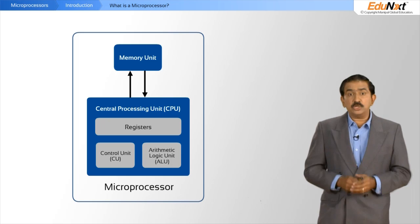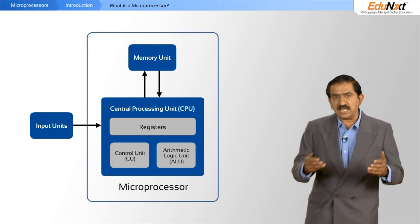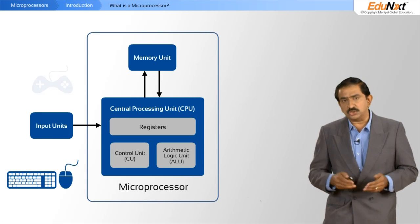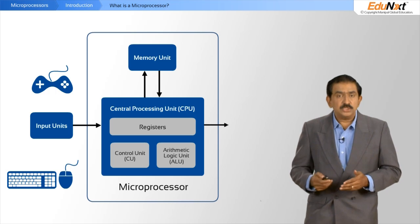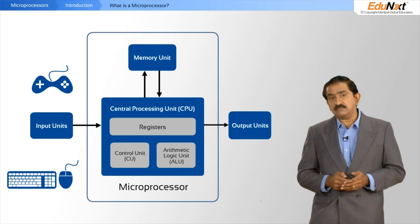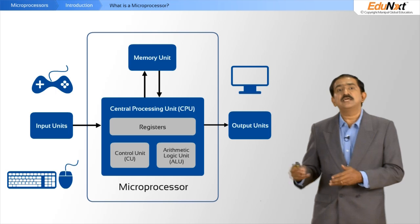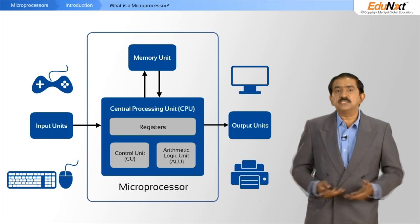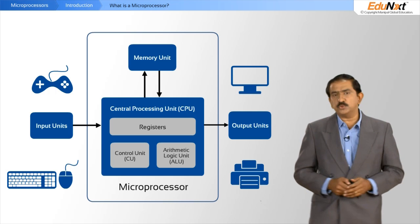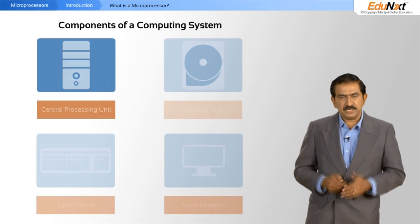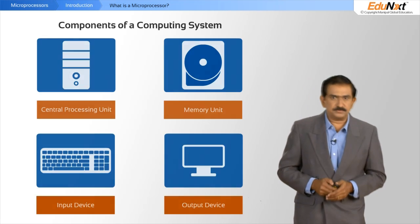A microprocessor on its own has no meaning. You need to connect input devices — devices like a keyboard, a mouse, a joystick, and so forth — and you need various output devices such as a monitor and a printer. Together this becomes a computing system, a computer. You will see the similarity between this and your personal computer at home: it has a CPU, it has memory, it has input devices, and it has output devices.